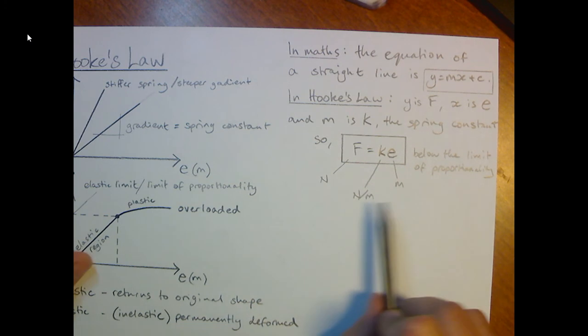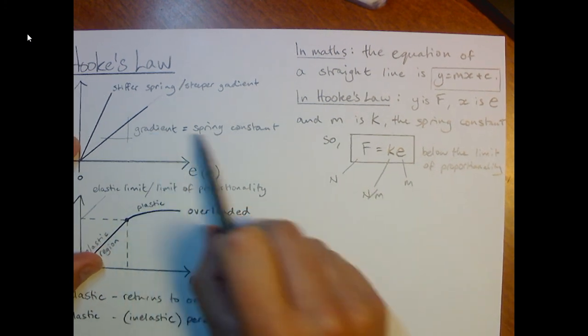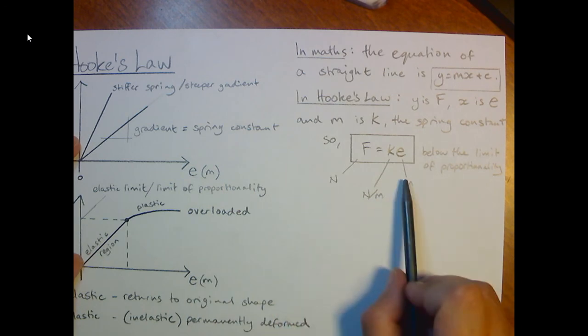So the spring constant that we used on the simulation was given in newtons per meter. And as long as we're using base units, then they're going to work together nicely.